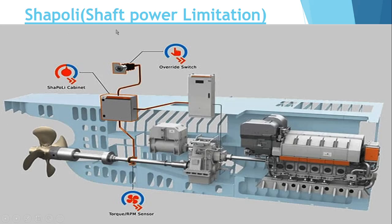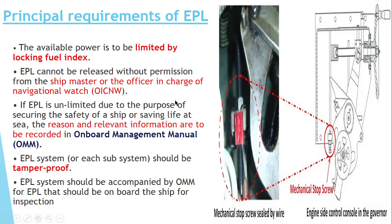As you can see on the screen, this is the shaft power limitation, this is the torque RPM sensor, this is the ShaPoli cabinet, and this is the control center which is sending a signal to the fuel pump. So basically, this shaft power limitation and the EPL — what they are doing is limiting the amount of fuel going to the engine, so the available power is limited by locking the fuel index in the engine power limitation.